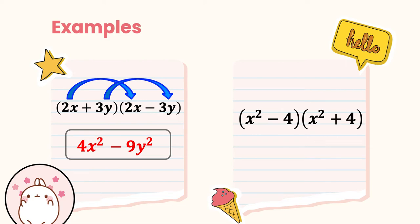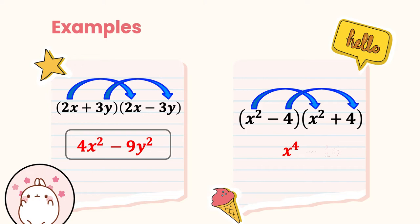Next example: what is the product of (x² − 4)(x² + 4)? Simply multiply x² times x², which gives x⁴, and then 4 times 4 gives 16. Since the result is a difference, the final answer is x⁴ − 16.